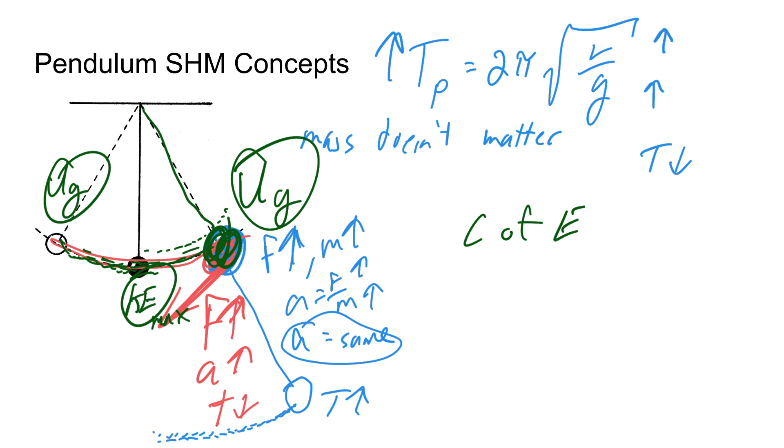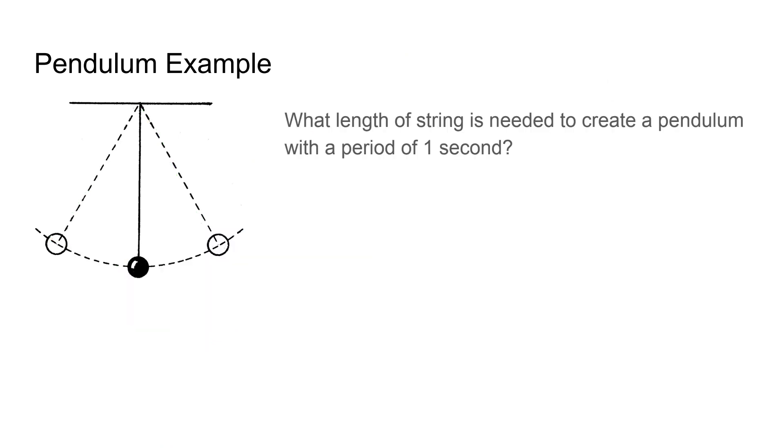All right, let's go ahead and do an example problem. So in this example we're going to be designing, let's say a clock. Let's say you want to create a clock where you want to know what length of string is needed on this clock in order to create a period of one second. Remember the period is the time it takes to go back and forth. So from here and from the beginning to the end and then it repeats. So the equation for this, T equals 2 pi square root of L over g. We want the time to be one second and we're looking for the length to do that. We're on earth, I guess we didn't specify that but we can make that assumption.